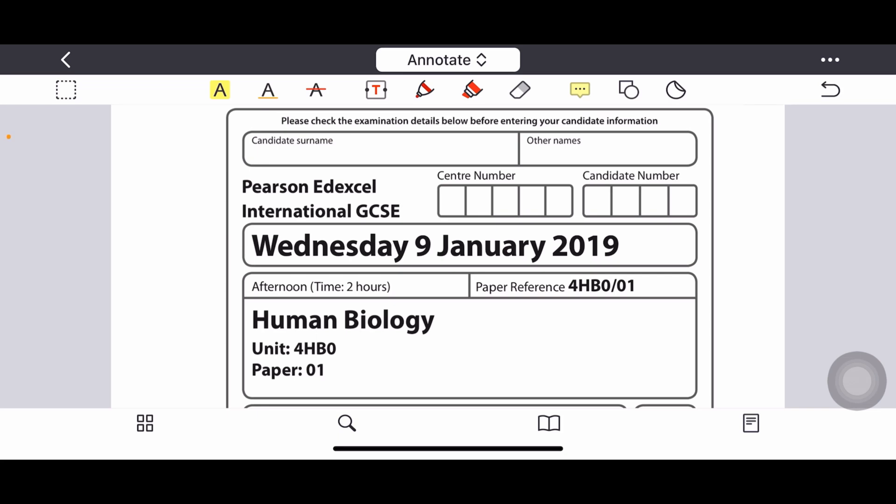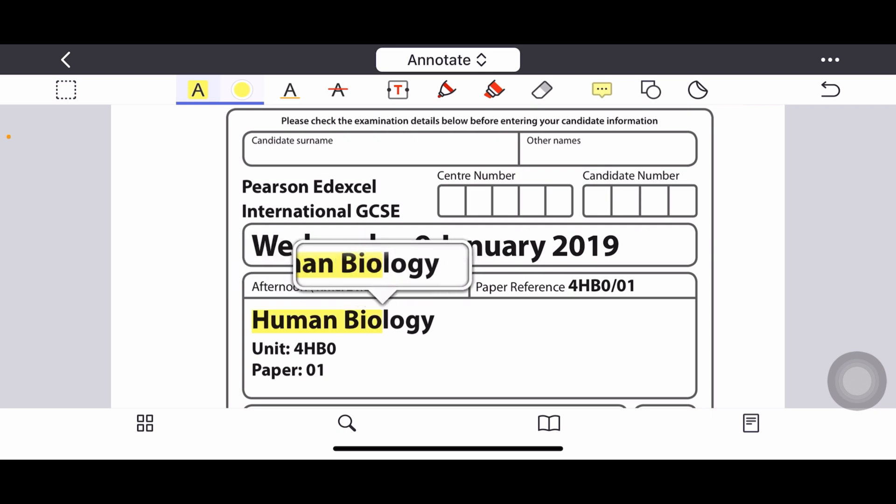Welcome to my channel IGCSE with Sadaf. In this video we are going to solve an exam paper from human biology. The paper is taken from January 2019, paper 1. Let's start.